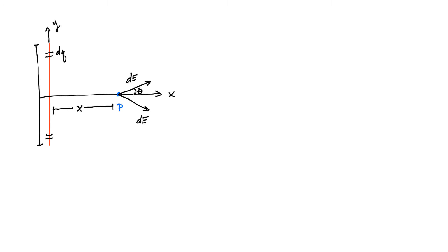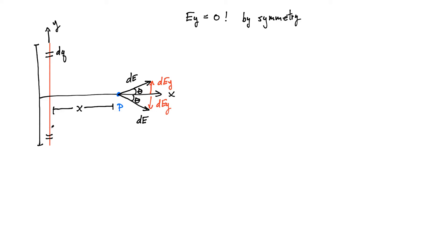Since I've picked the position of point x to be in the center of that wire, every time there's a little charge dq up on the top, there's also going to be a little charge dq on the bottom, and that one's also going to produce an electric field with the same magnitude but in the opposite direction. If I define this to be the angle theta, what we're going to notice is that those vectors can be broken down into components, and the y-components of those vectors are going to cancel out — they're going to be equal and opposite. So we can conclude right away, just from the symmetry of the problem, that the total field E_y is going to be equal to zero.